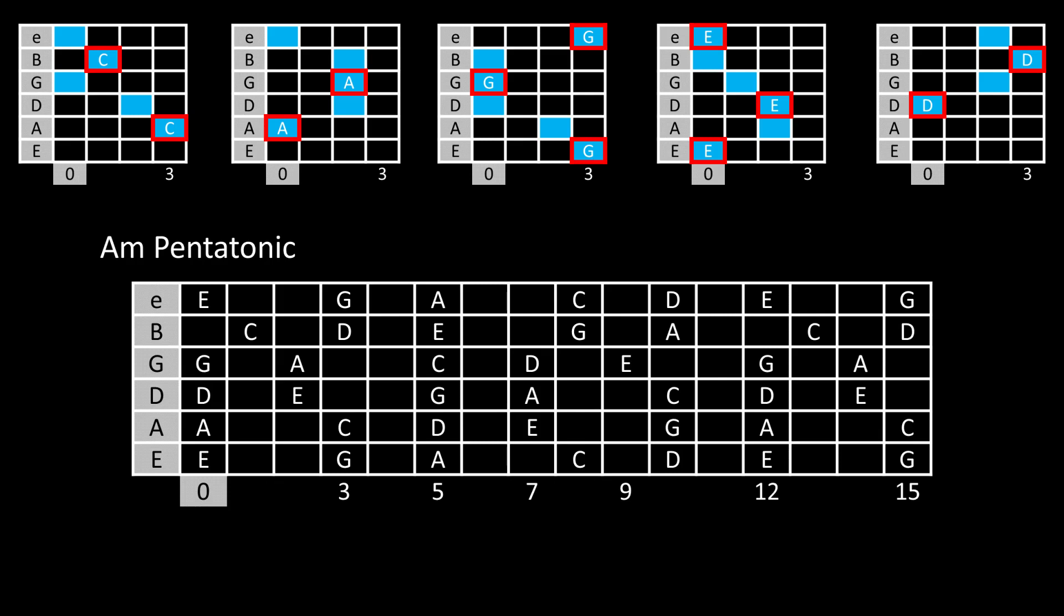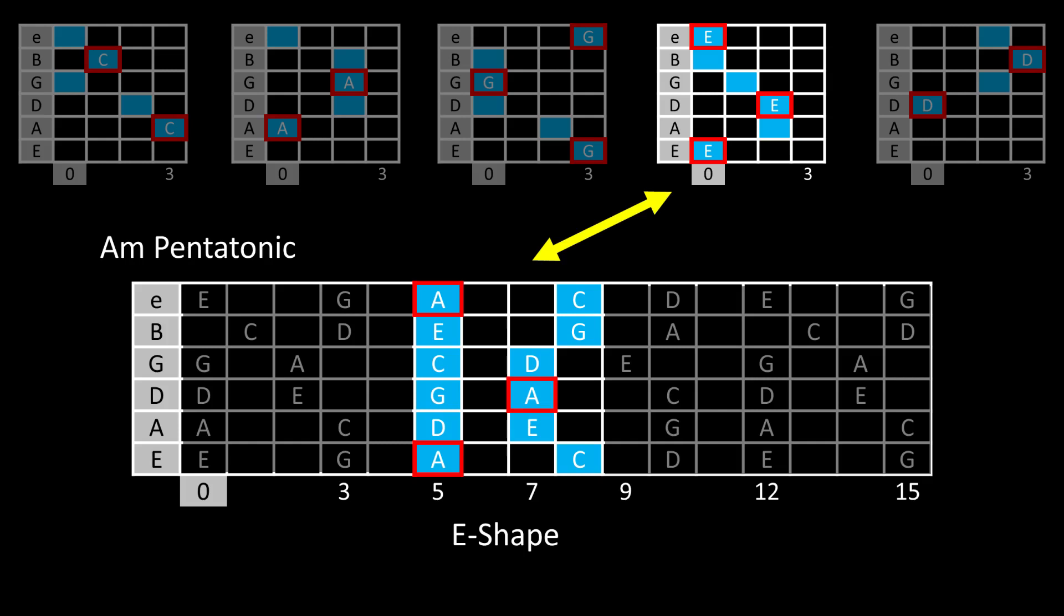This is the A minor pentatonic scale. Notice that the shape 1 that I showed you before has the root notes in the shape of the E chord. So instead of calling this shape 1, we call it the E shape of the A minor pentatonic scale. I start with the E shape because it is the most common that guitarists first learn.